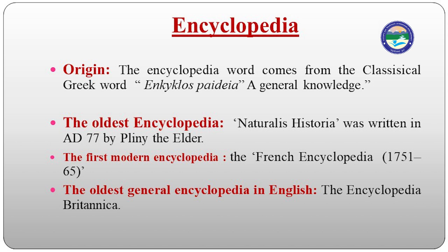The oldest encyclopedia is Natural History, written by Pliny the Elder. The first modern encyclopedia was the French Encyclopedia, published around 1751. The Encyclopaedia Britannica is the oldest English encyclopedia, and Natural History published by Pliny the Elder is recognized as the earliest work of this kind.